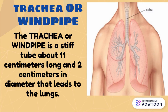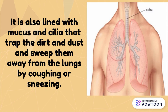The trachea or windpipe is a stiff tube about 11 cm long and 2 cm in diameter that leads to the lungs. It is also lined with mucus and cilia that trap the dirt and dust and sweep them away from the lungs by coughing or sneezing.